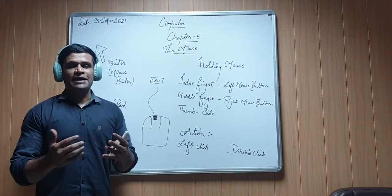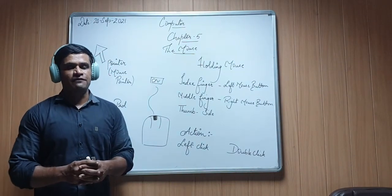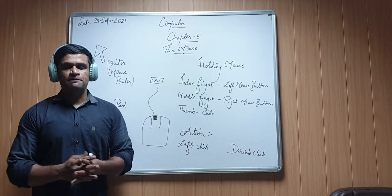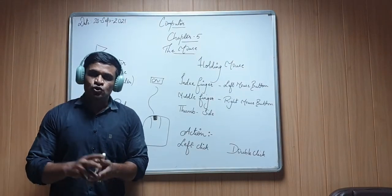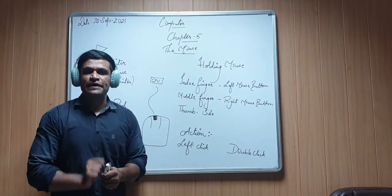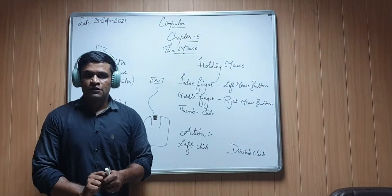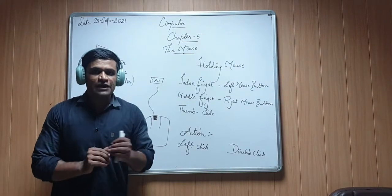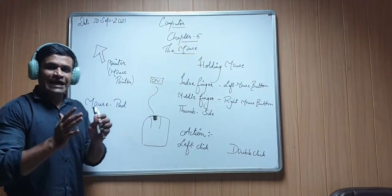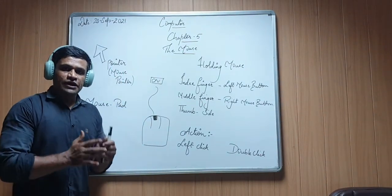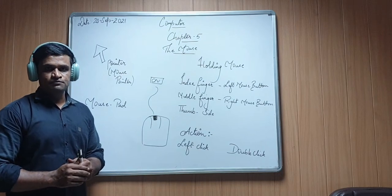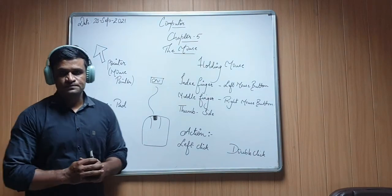Like to type alphabets, we have alphabetic keys. To type numbers, we have numeric keys. To give blank spaces, we have the space bar. In the same context, we are going to talk about another important device of the computer — that is the mouse.